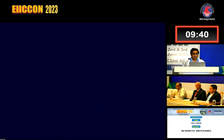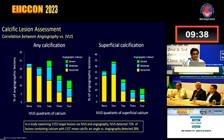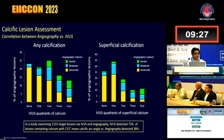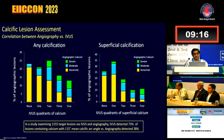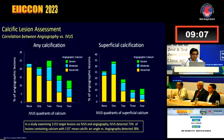This is data from a very old paper by Gary Mintz et al., published in Circulation 1995. At that time IVUS was not as developed as it is nowadays. What he set out to find out was, in 1,155 target lesions, whether calcification was present or not — a study comparing angiography and IVUS.